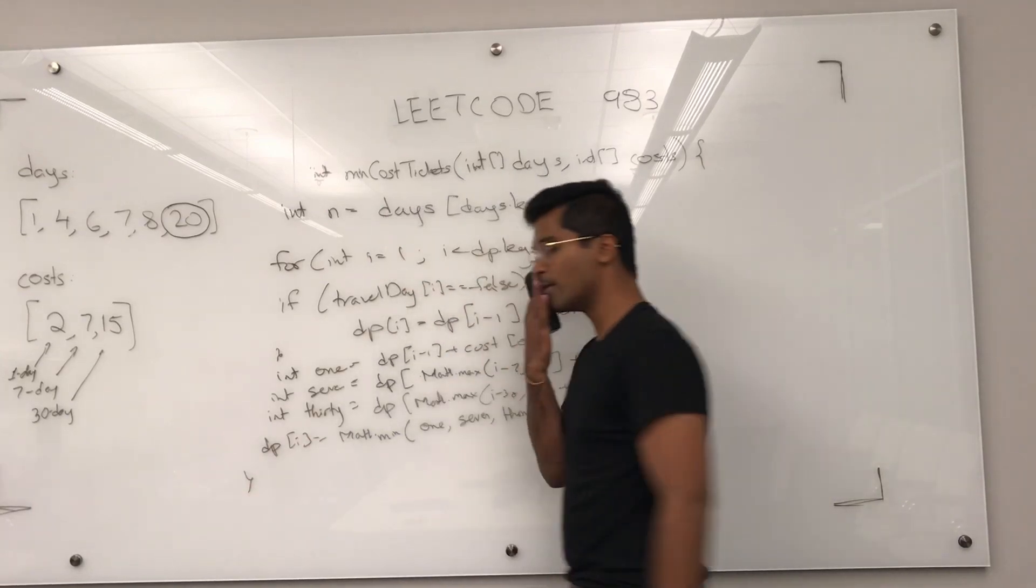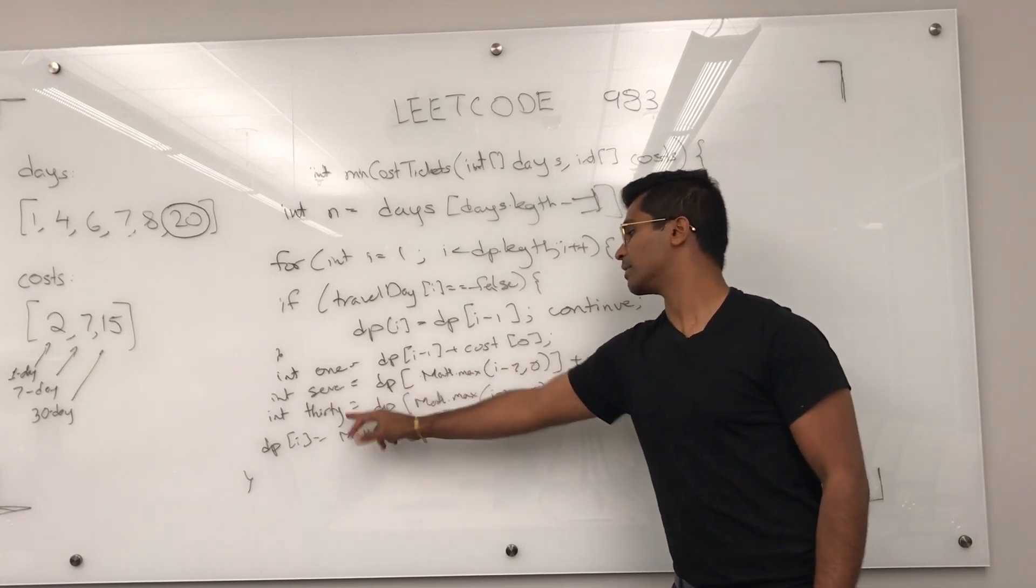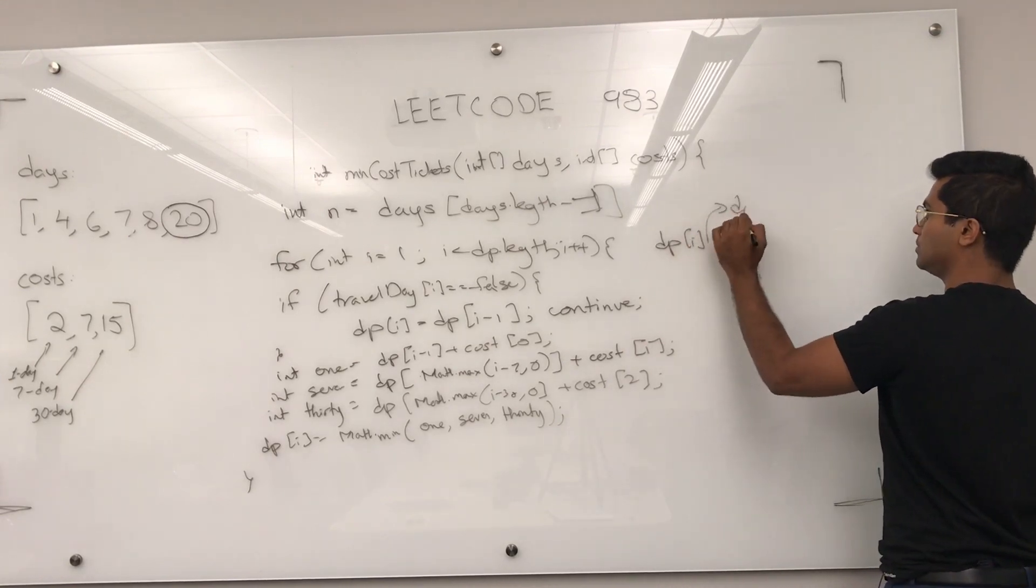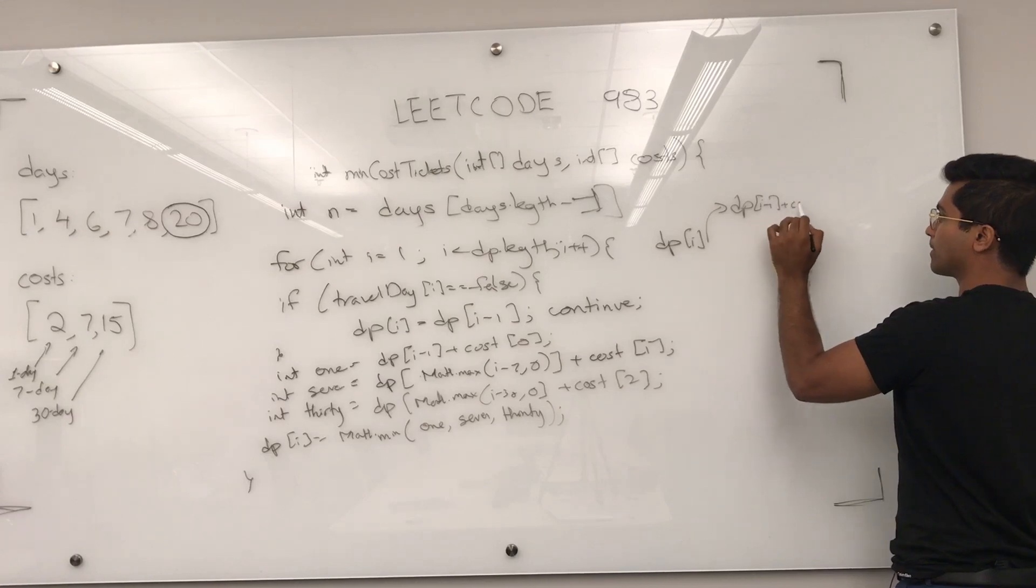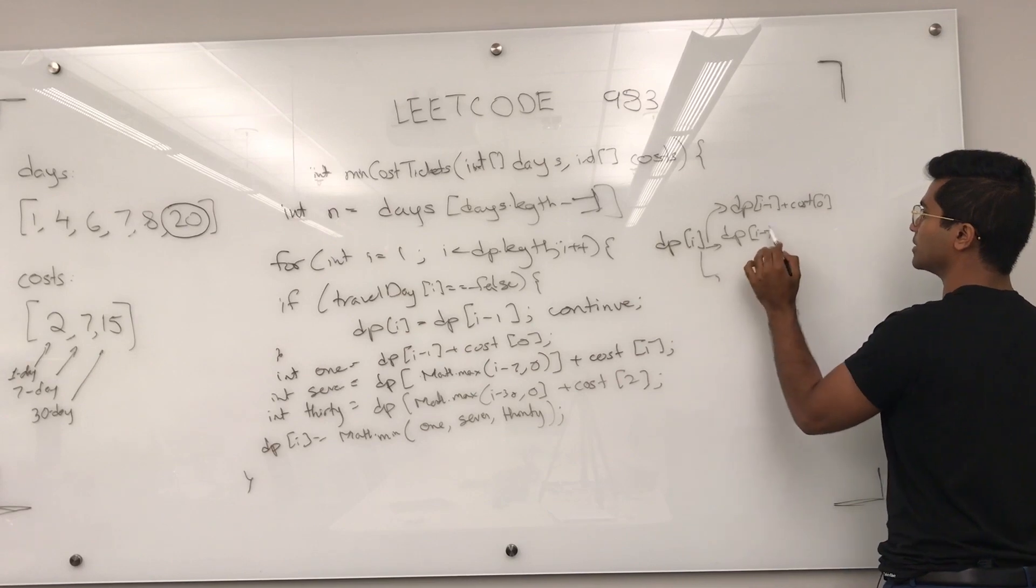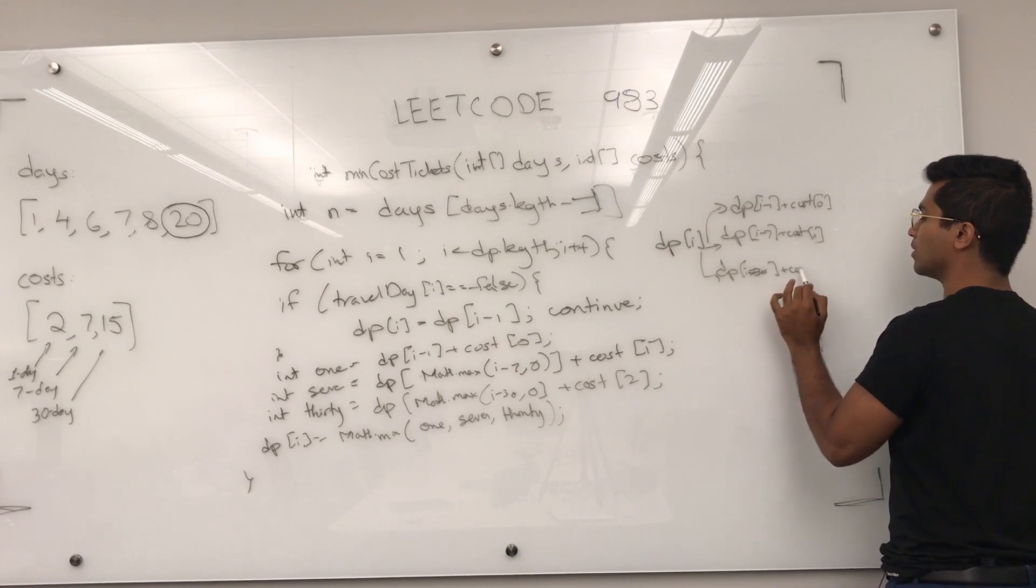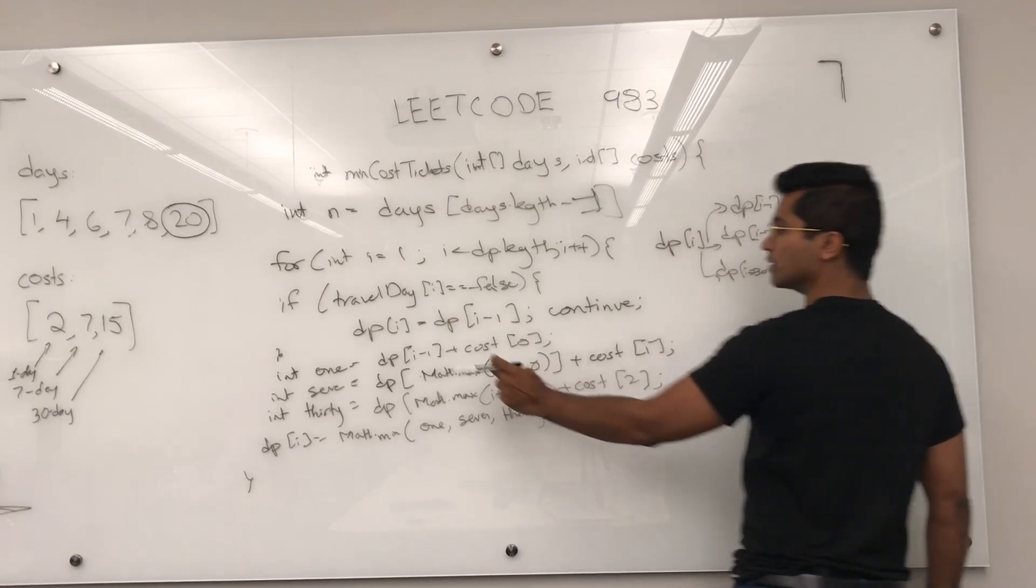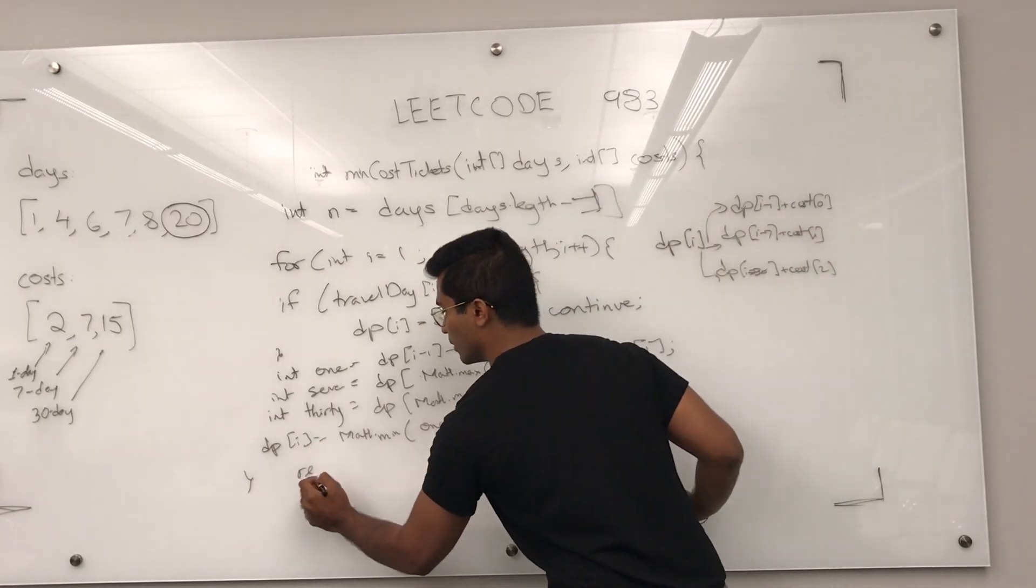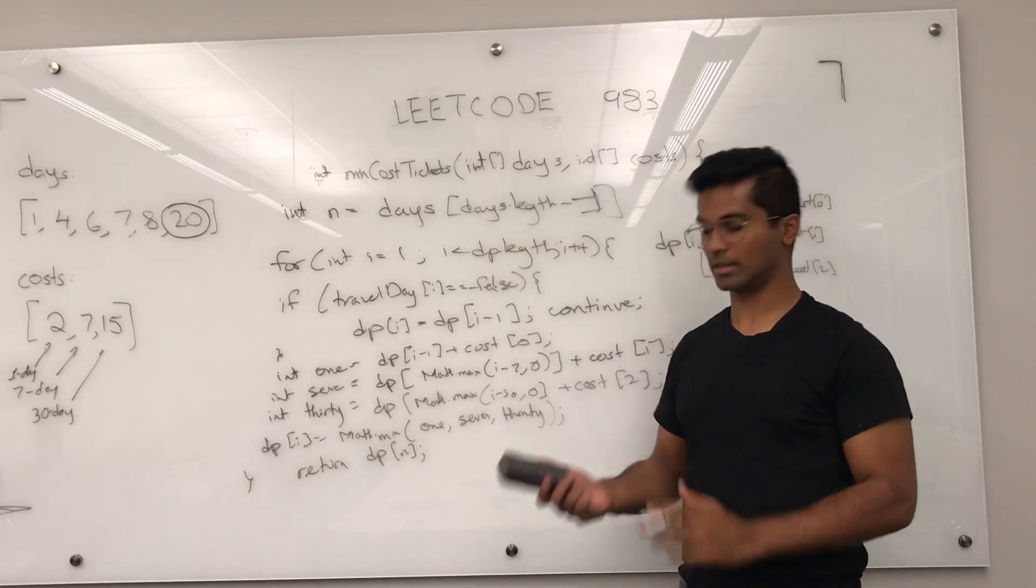Now, I know that there is no three argument min function in Java, but you get the idea. This 1, 7, and 30 is pretty much going to be the DAG dependency for cost of 0, DP of i minus 7 cost of 1, DP of i minus 30 cost of 2. So these three numbers is what DP of i is going to depend upon. And then all we have to do is return the last number in the DP array.